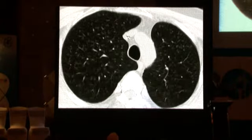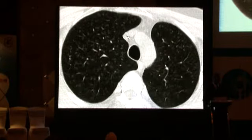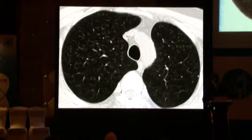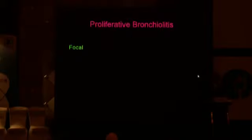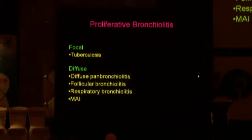If you show me this pattern without history, I'd need to know the clinical context. If the patient is a smoker, this is respiratory bronchiolitis — that's how it works. You can see branching ill-defined centrilobular opacities that are low-density and bilaterally symmetrical. In summary: focal high-density tree-in-bud is TB; low-density diffuse disease covers DPB, follicular bronchiolitis, respiratory bronchiolitis, or MAI.